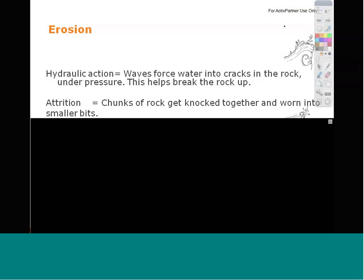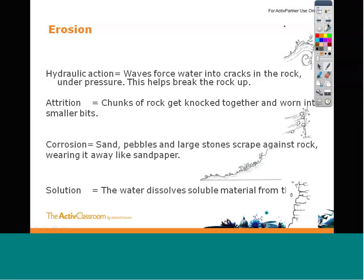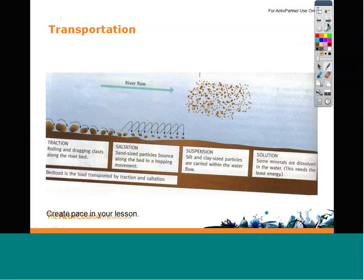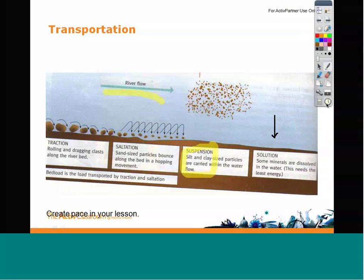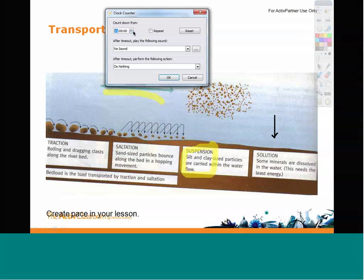The next page was designed to be a written activity where students would make a copy of the diagram. This activity still stands, but now I can use the annotation tools to highlight keywords, explain any processes happening in the river, and guarantee that each of my students understands what's happening at each stage. I could also use the clock tool to set a timer, adding pace to my lesson and ensuring that students stay on task.